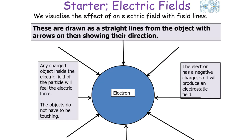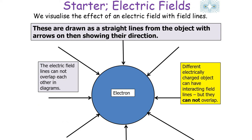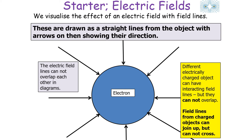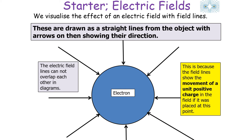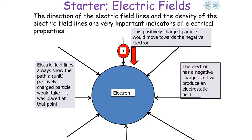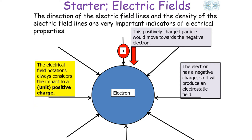Field lines are drawn as straight lines from the object with arrows showing their direction. Any charged object inside an electrical field will feel the electrical force; the objects do not have to be touching. Different electrically charged objects can have interacting field lines but they cannot overlap or cross. Field lines show the movement of a unit positive charge in the field: a positively charged particle will move towards the electron because field lines always show the path a positive charge would take.